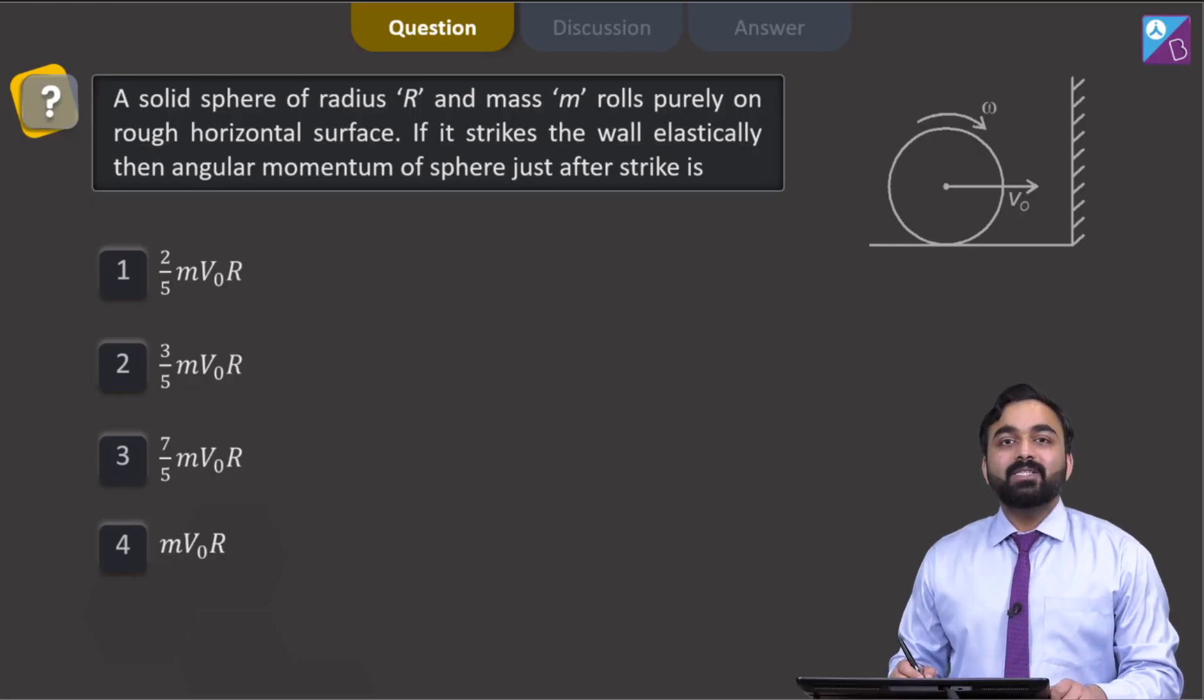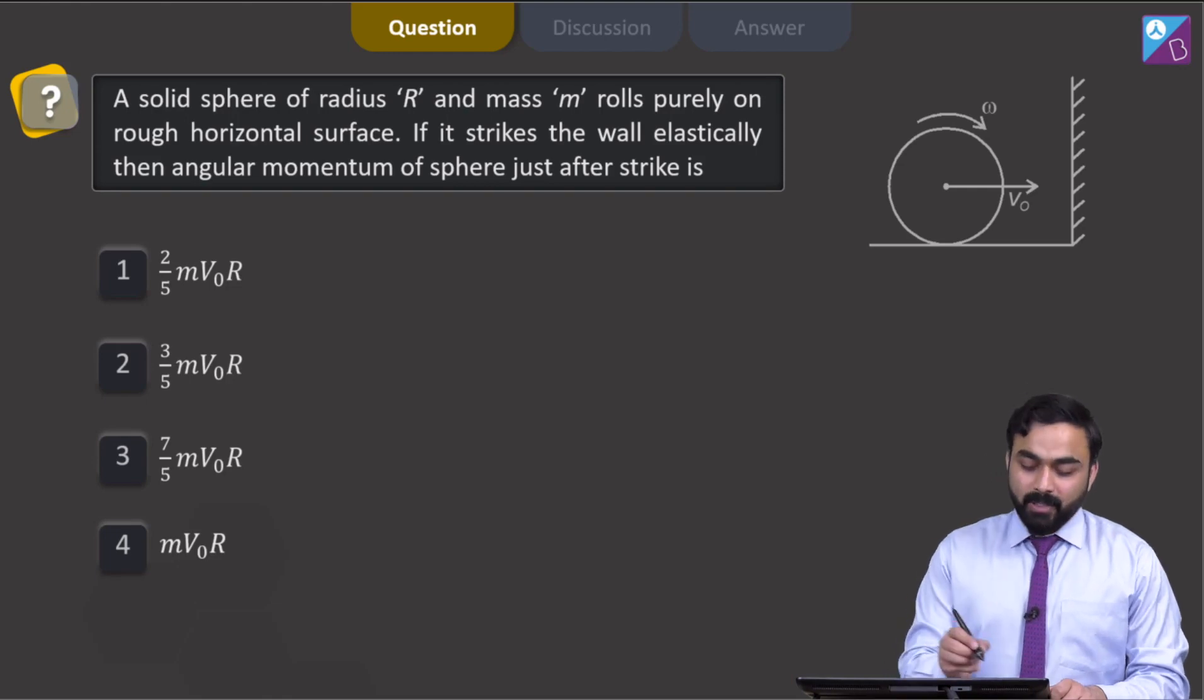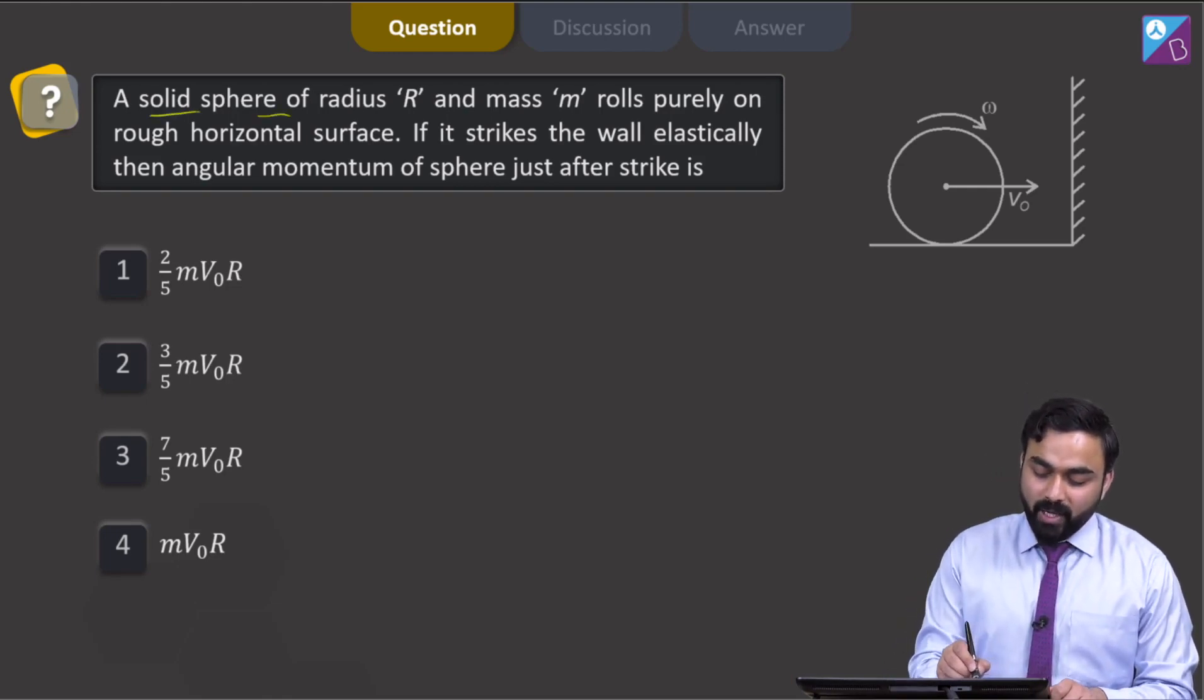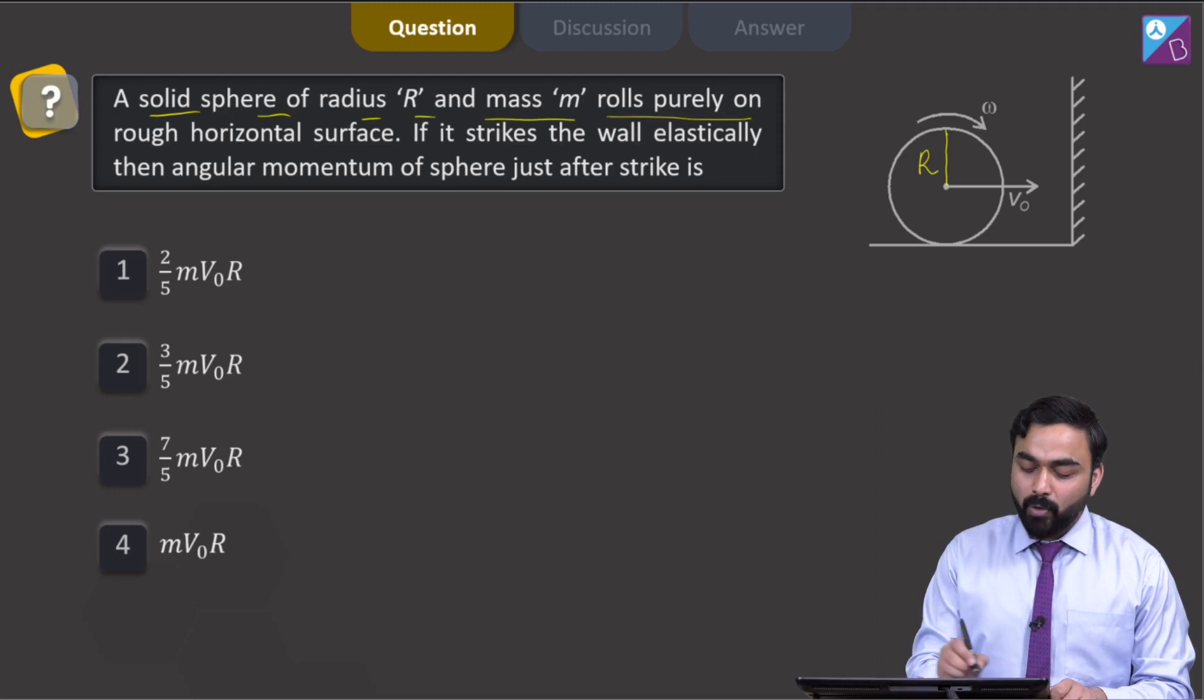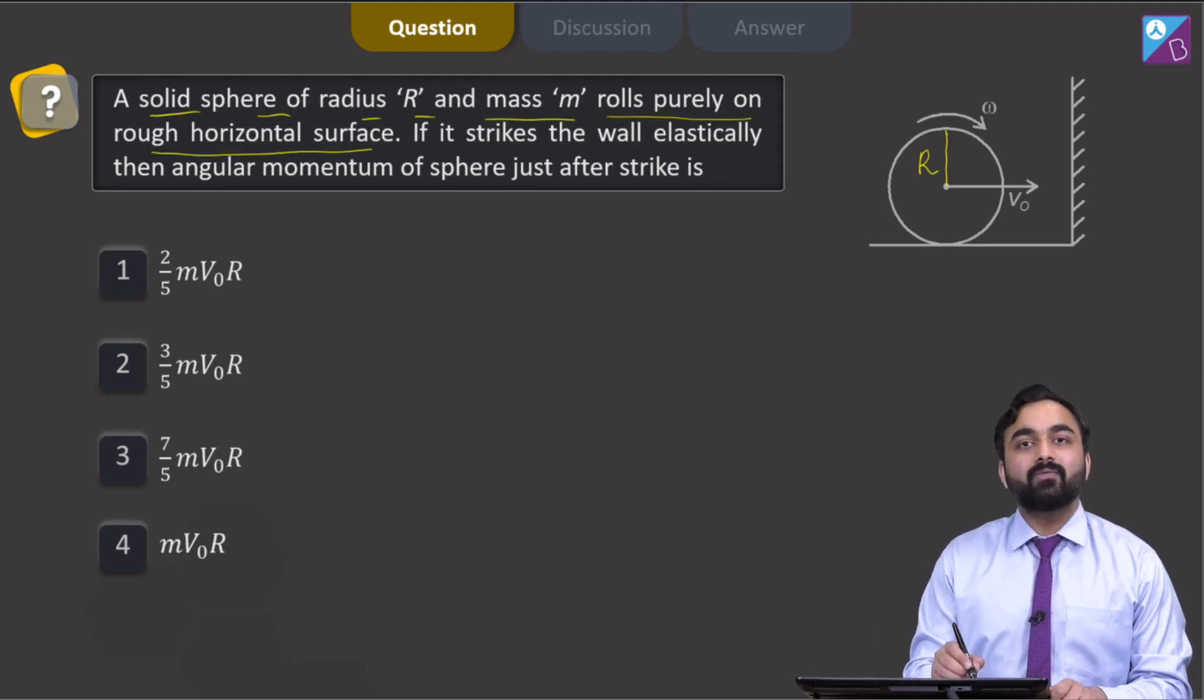Hello dear students, let us check out this particular question now. In this question, a solid sphere of radius capital R and mass m rolls purely on rough horizontal surface.